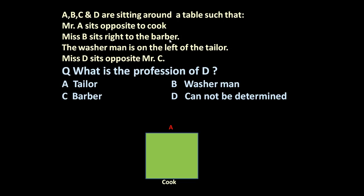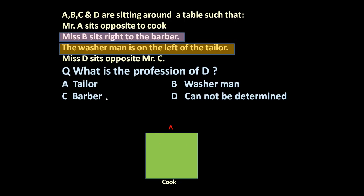Next statement, Miss B sits right to the barber. But we don't know the position of B or barber, so nothing can be said about it. Let us underline this. We will see it afterwards. The washerman is on the left of the tailor. Again we don't know who is tailor and who is washerman, so let us underline this again.